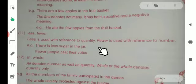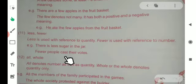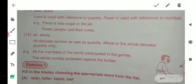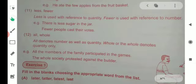Fewer people cast their votes. Both mean less, but less is used with quantity and fewer is used with number. Next is all and whole. Both have similar meanings.